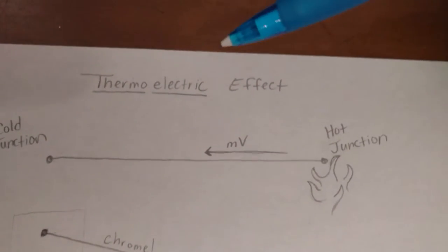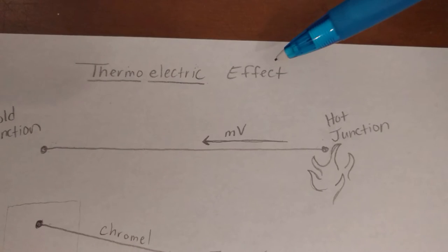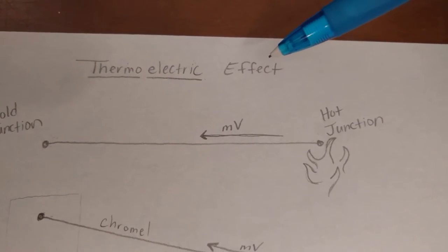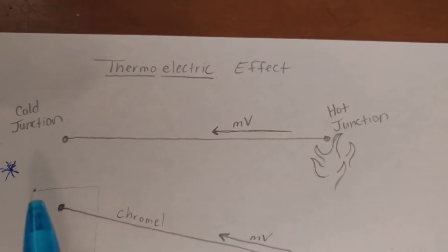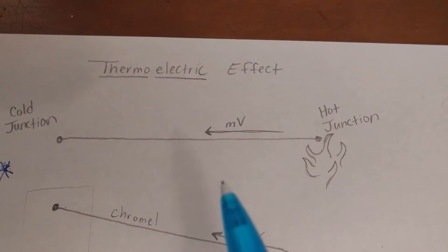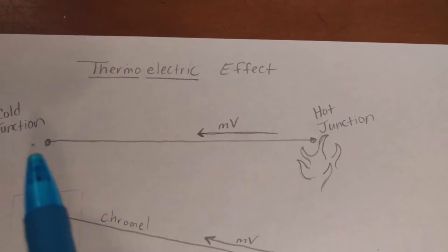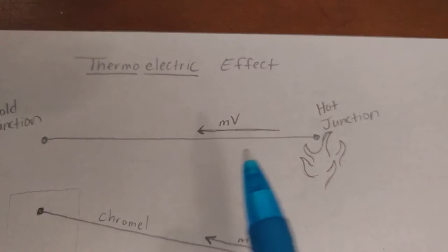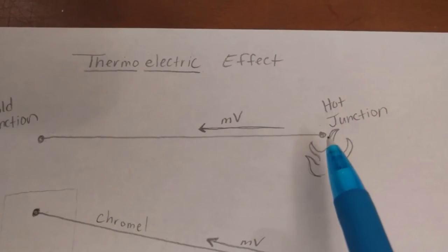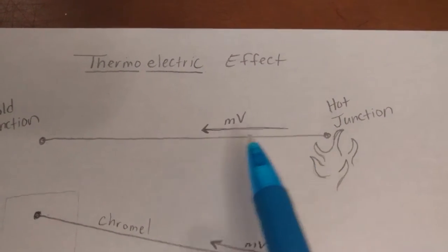It works by harnessing something called the thermoelectric effect. The thermoelectric effect is an effect where, let's say you have a wire, and one end of the wire is exposed to a heat source and the other end is somewhere cooler. What's going to happen is a millivolt signal is going to be generated from the hot side that's going to travel to the cooler side.